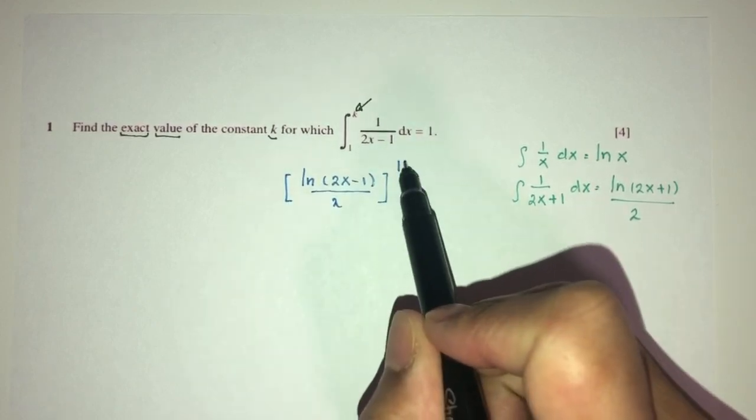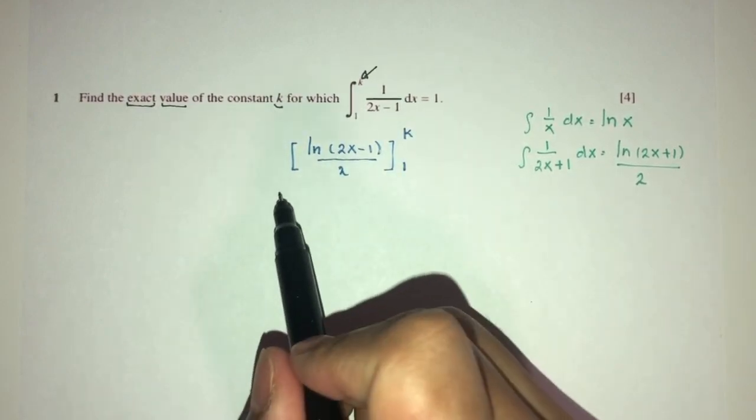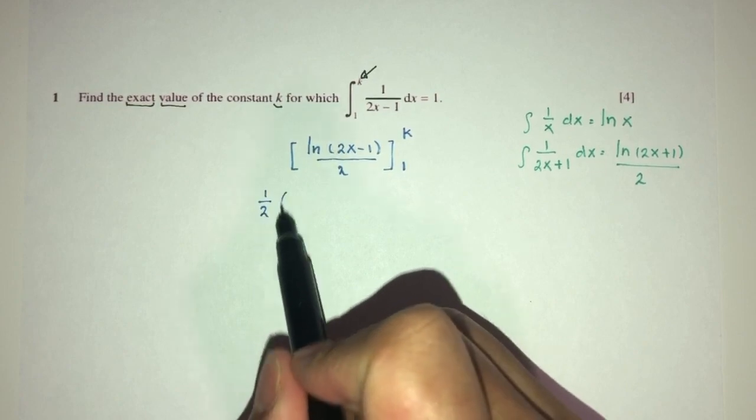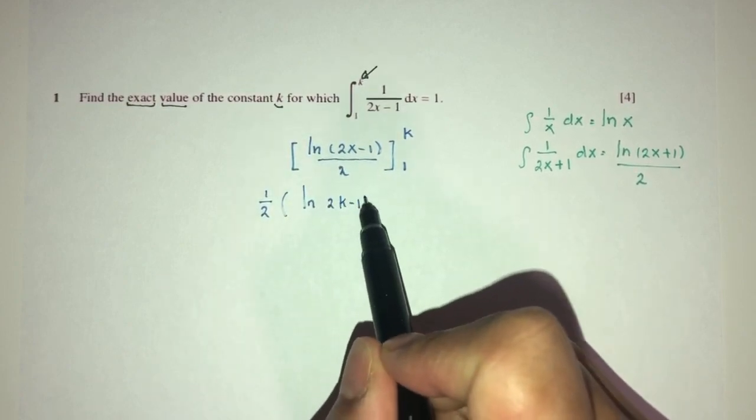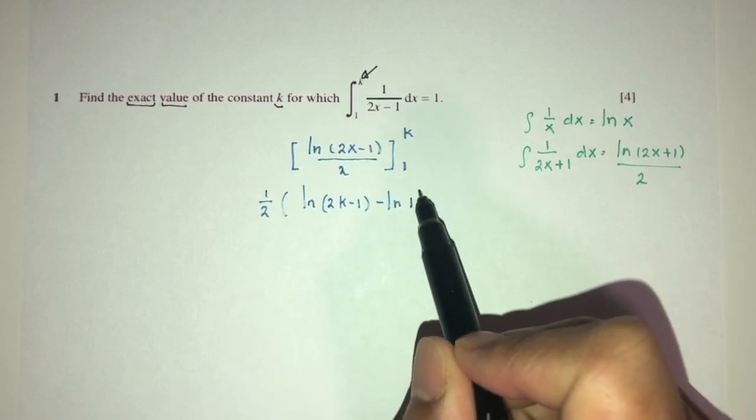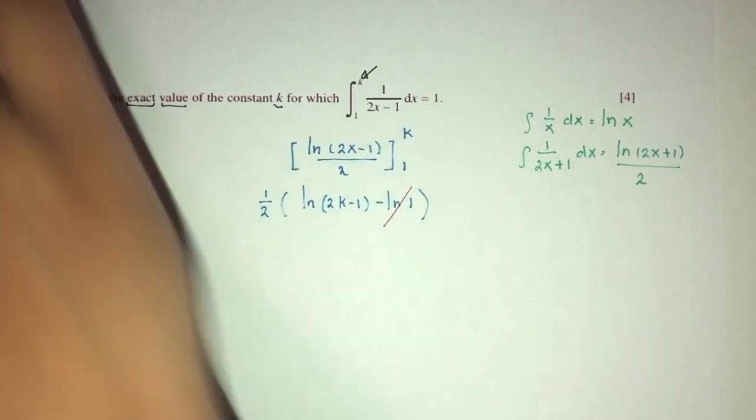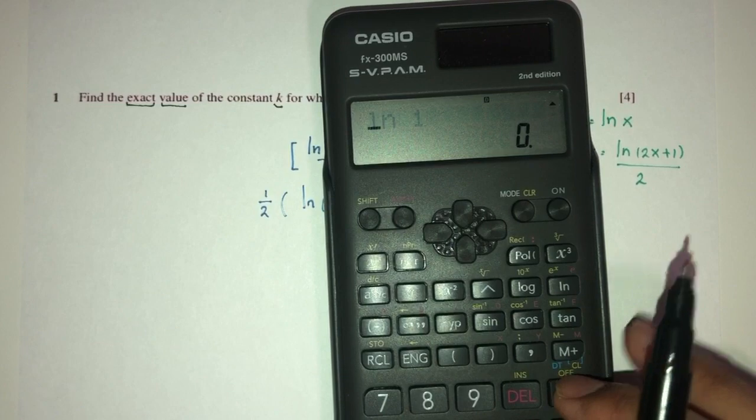Limits of k and 1. Let's plug in the values. We have half times 2, we can take it outside for now. We have ln of 2k minus 1 minus ln of 1. This will be 0 because we should know that ln of 1 is 0.